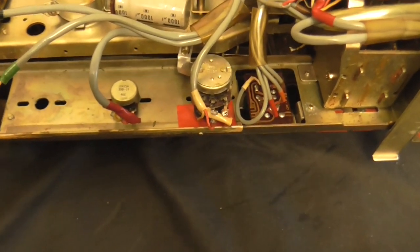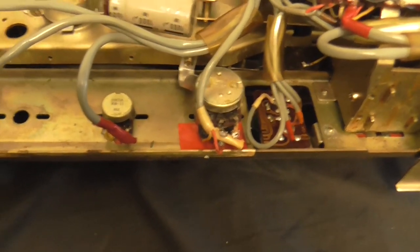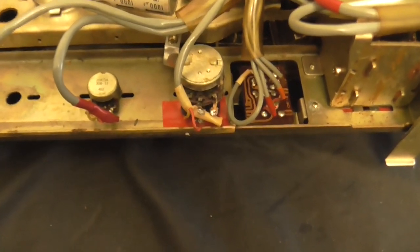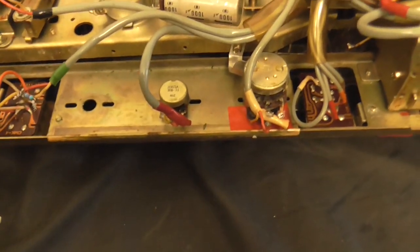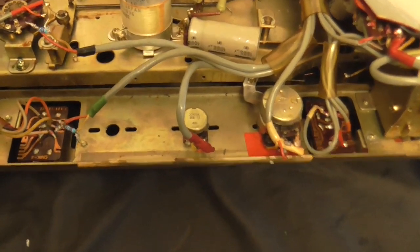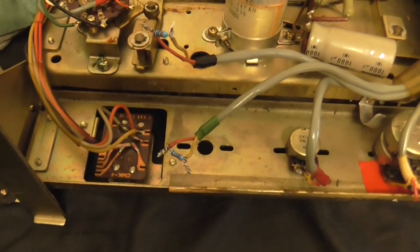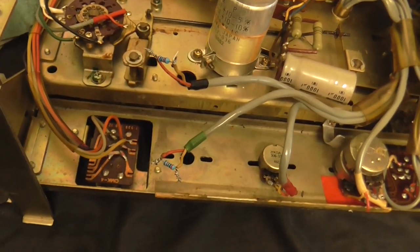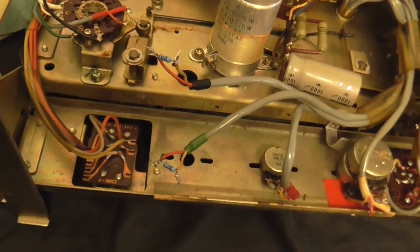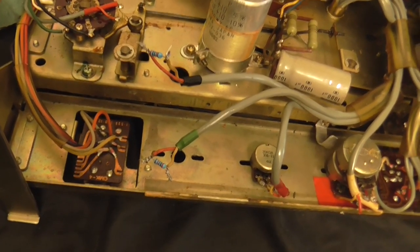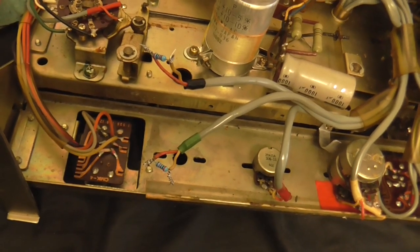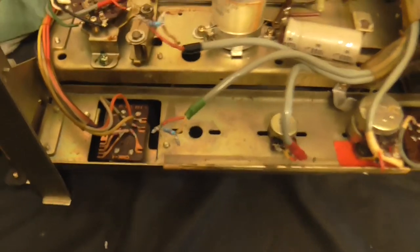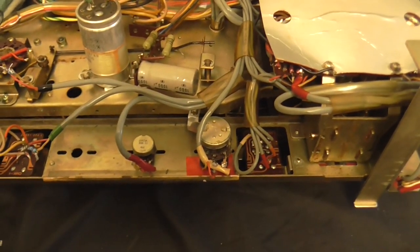Alright. So we've got the new volume potentiometer in there. Put a little bit of insulating tape there so it doesn't short out on the chassis. And of course, I've replaced that tone control with a couple of 20k ohm resistors. So that's going to mimic what the tone control is like when it's set up all the way, which is where I always have it anyway. So that's not really going to make any difference.